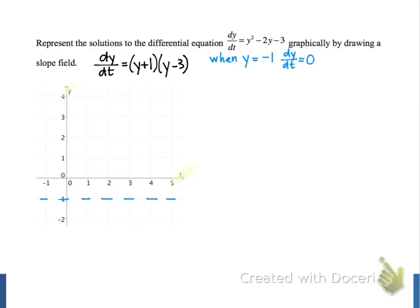We have another case that's easy to work with: when y is equal to 3. When y is equal to 3, our second factor will be 0, and that means dy/dt is equal to 0 at all points on our grid where the y value is 3 and t can have any value. So we'll draw those horizontal tangent lines at y equals 3 as well.